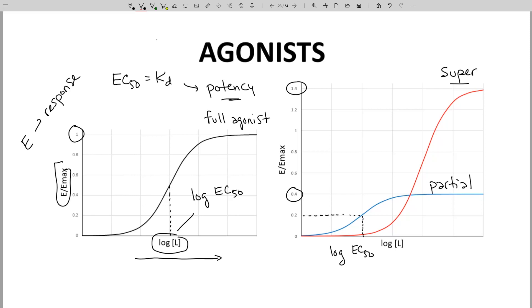We still measure potency at the inflection point, which occurs at about 0.7 for this ligand. It is still called the EC50, log EC50 in this case, even though it occurs above 50% response.